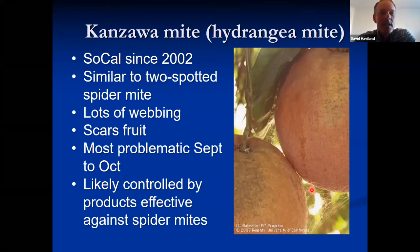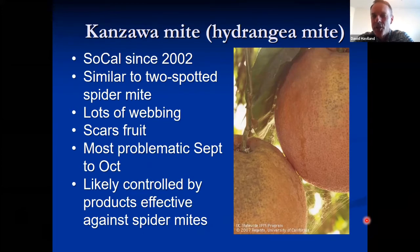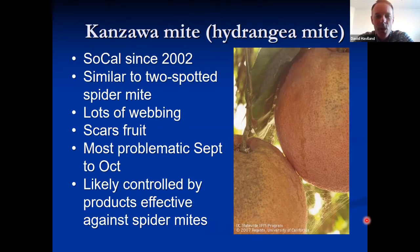Three mites briefly: Kanzawa mite, also known as hydrangea mite, has been in Southern California since about 2002. Very similar to two-spotted spider mite — makes lots of webbing and scars fruit, most problematic in September or October. Being a spider mite, most spider mite controls should work. If you're in Southern California and see something with a lot of webbing, don't just assume it's two-spotted spider mite — it might be this Kanzawa mite.